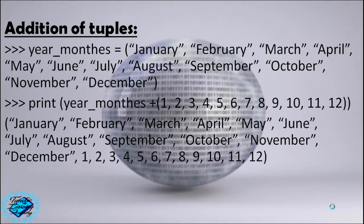Addition of tuples. year_months equals January through December. Print year_months plus a tuple of numbers from 1 to 12 — January, February. We will get a tuple of January through December followed by 1, 2, 3, 4, 5, 6, 7, 8, 9, 10, 11, 12. We will get a tuple of 24 items as shown.